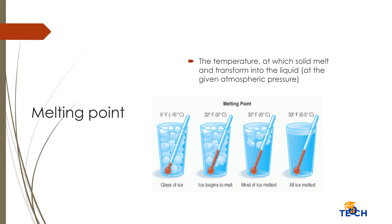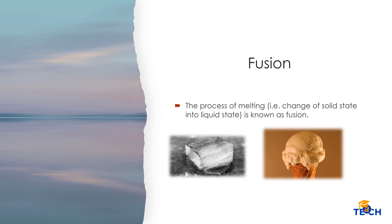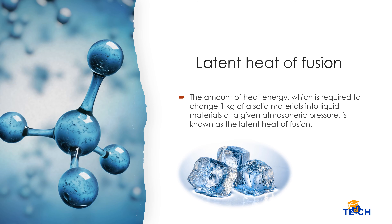The temperature at which solids melt and transform into liquid at the given atmospheric pressure is called the melting point. The process of melting — that is, change of solid state into liquid state — is known as fusion. The amount of heat energy required to change one kilogram of a solid material into liquid at a given atmospheric pressure is known as the latent heat of fusion.